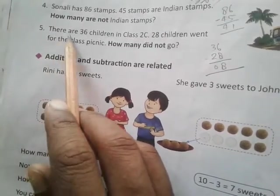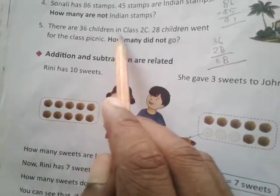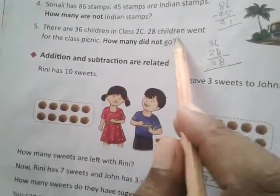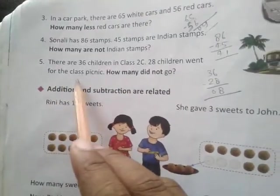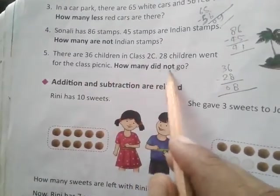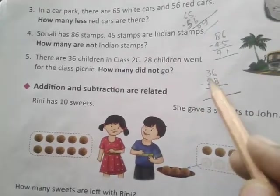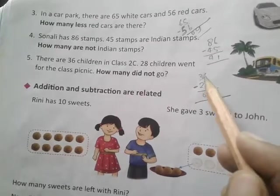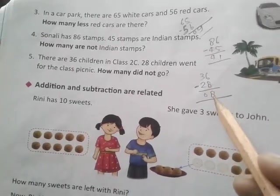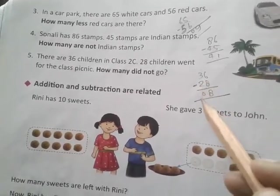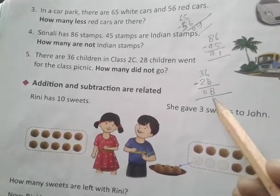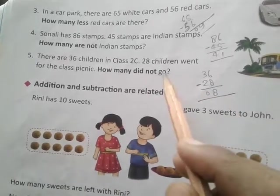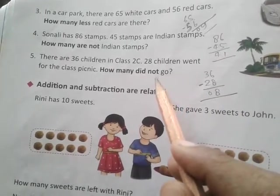Question 5. There are 36 children in class 2C. 28 children went for the class picnic. How many did not go? 36 subtract 28. 16 subtract 8 is 8, 2 subtract 2 is 0, equals 8. 8 children did not go to picnic. Thanks for watching.